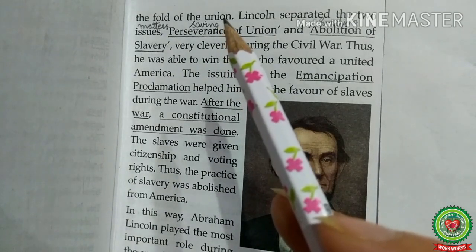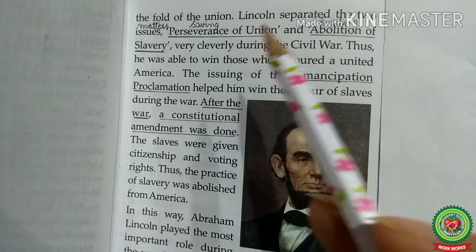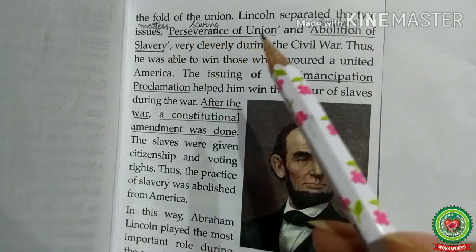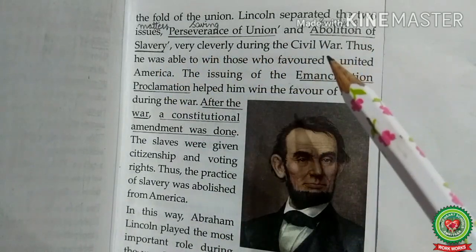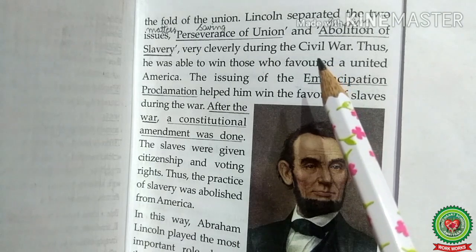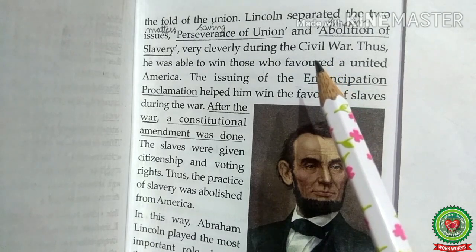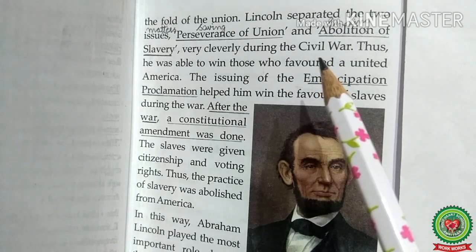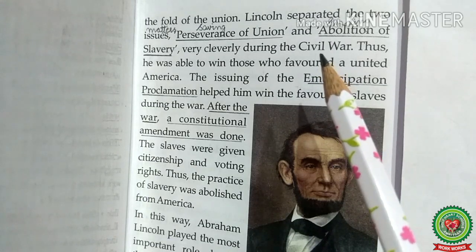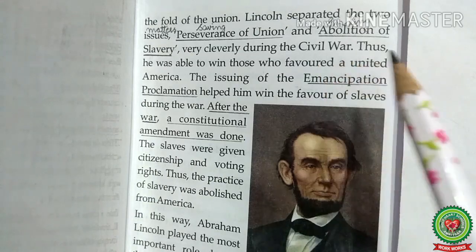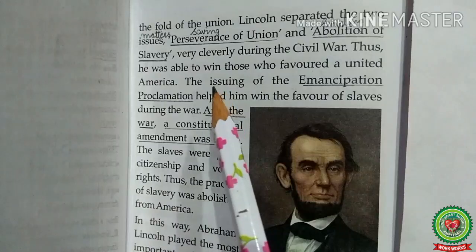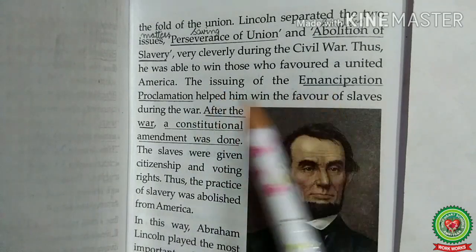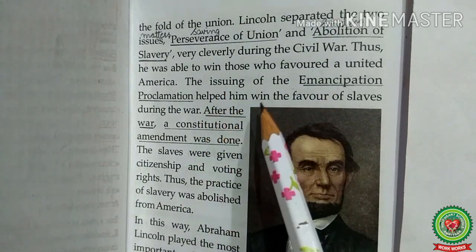Lincoln separated the two issues — preservation of the Union and abolition of slavery — very cleverly during the Civil War. His motto was not only to abolish slavery from America, but also to preserve the Union, and for this he acted very wisely. Thus he was able to win those who favored a united America. The issuing of the Emancipation Proclamation helped him win the favor of slaves during the war.